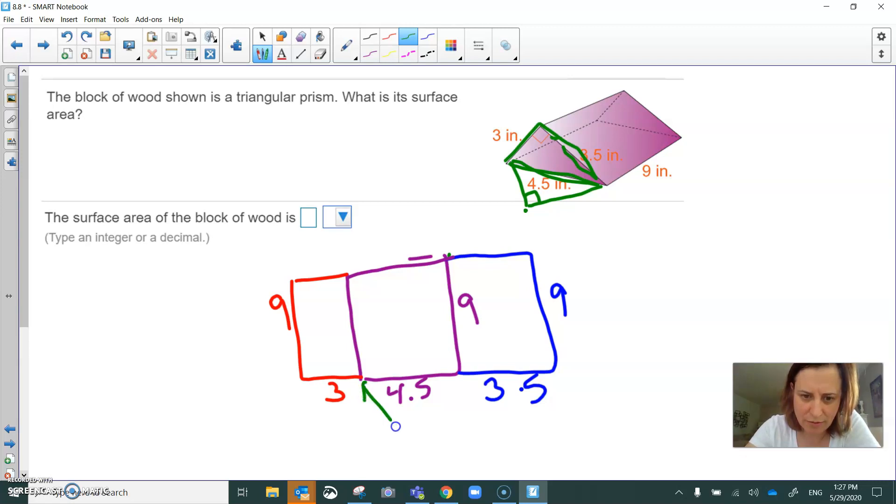So this is the angle that's 90 degrees. This side was three and this side is three and a half. And then I will also do it over here. Open it up and lay it flat. This side is three and this side is three and a half.